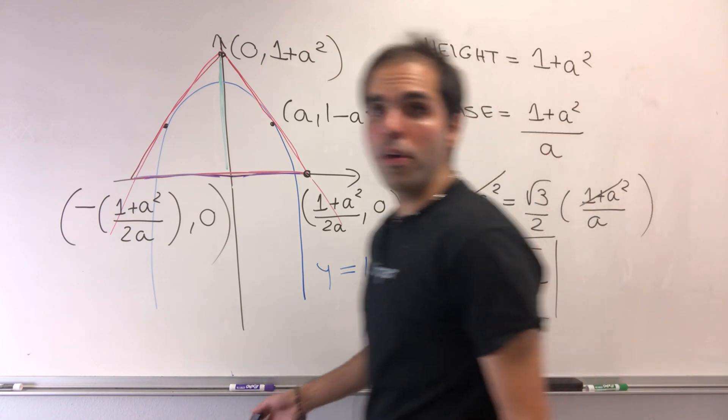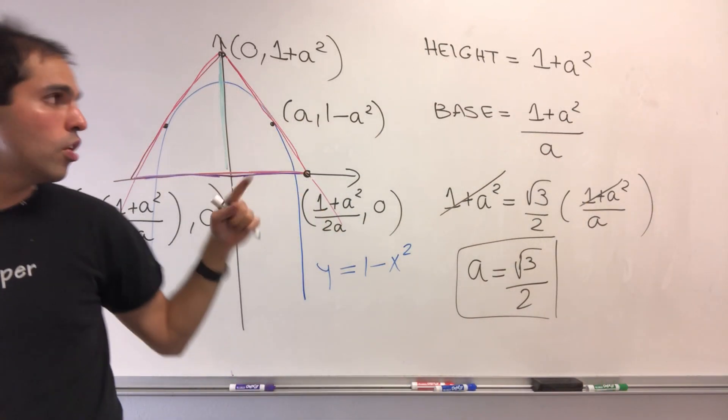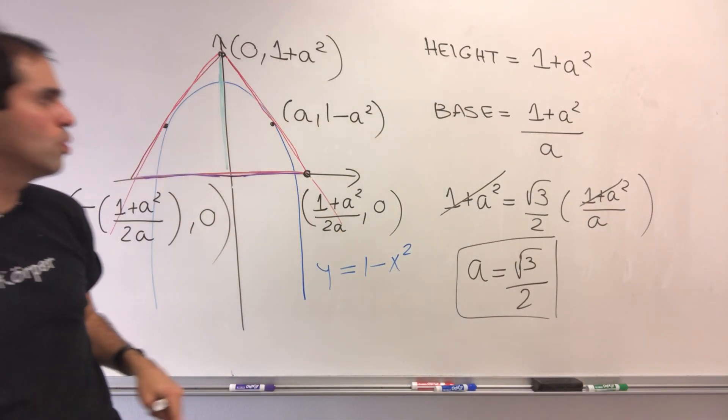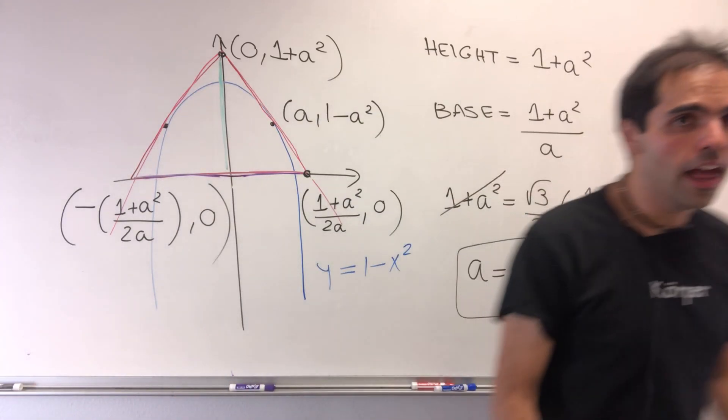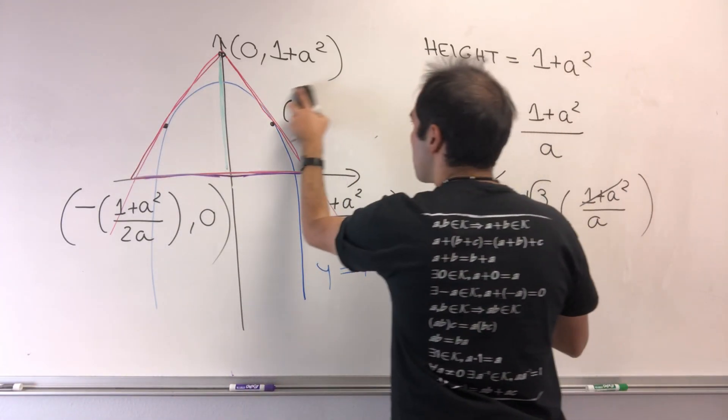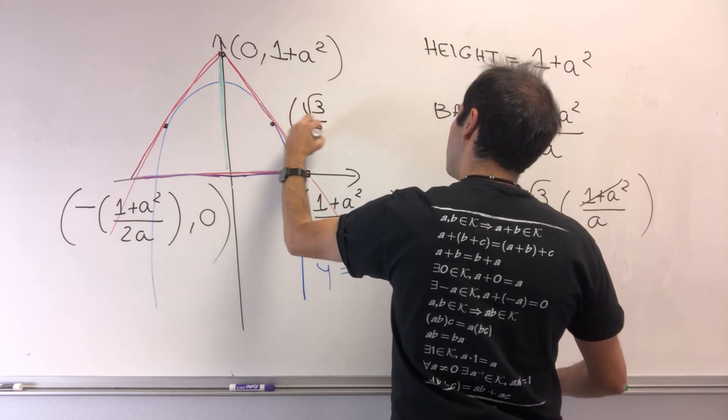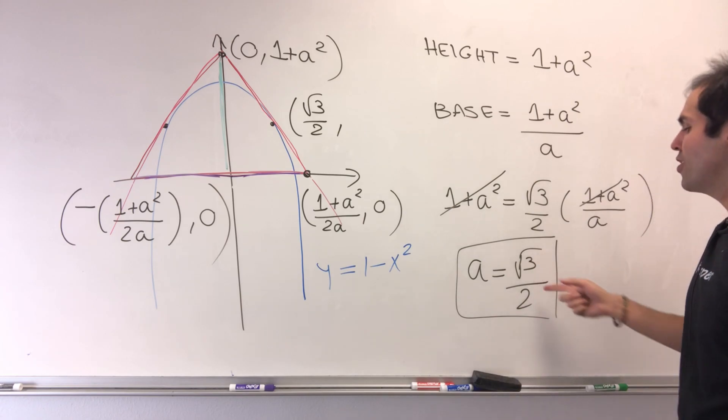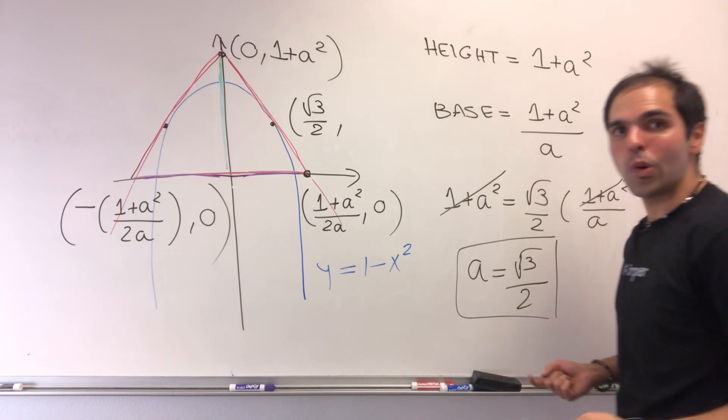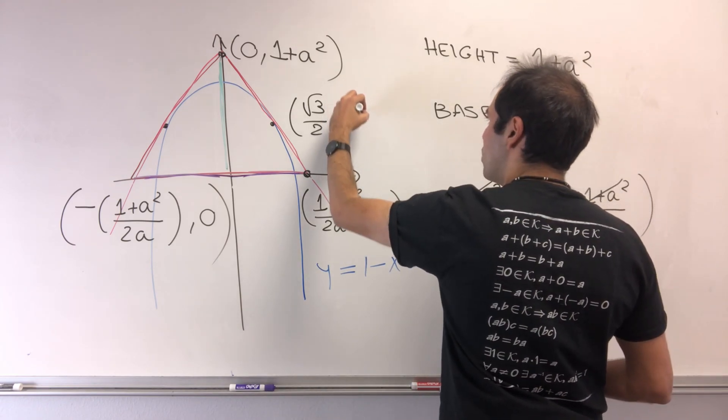And all we need to do now to solve this problem is figure out those two points. Well, a is square root of 3 over 2. And then 1 minus a squared, I think it's 1 minus 3 quarters, which becomes 1 quarter.